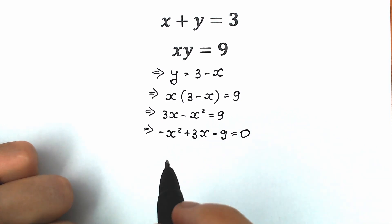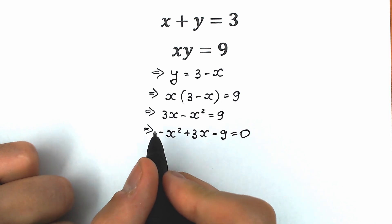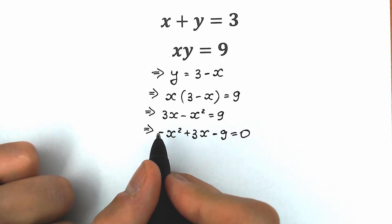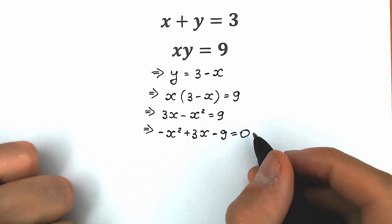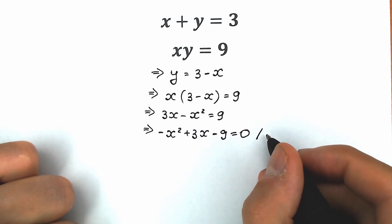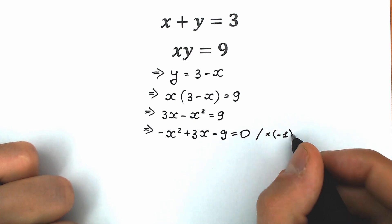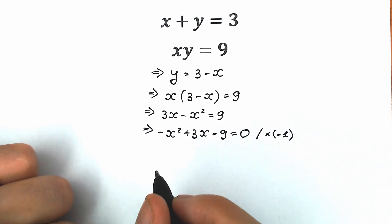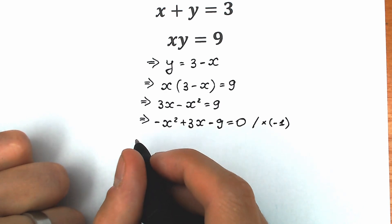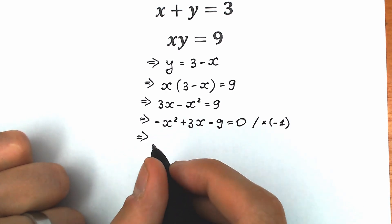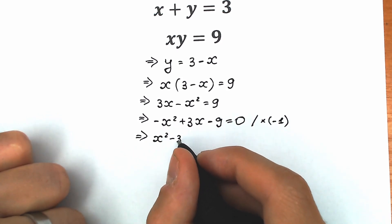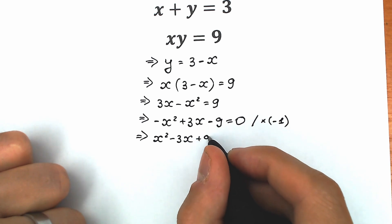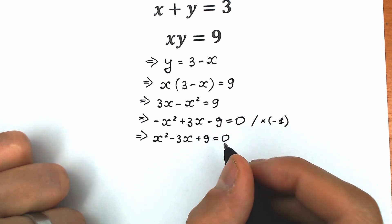So we have minus x squared plus 3x minus 9 equals 0. Now let's multiply by minus 1, because we prefer a positive leading coefficient. This helps us change the signs. So we have x squared minus 3x plus 9 equals 0.